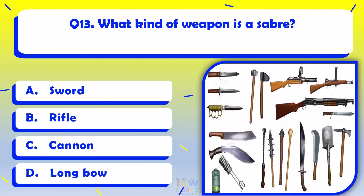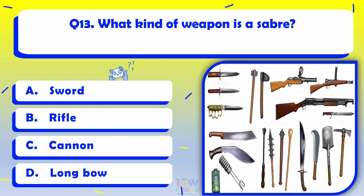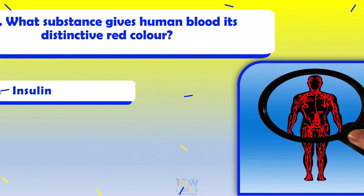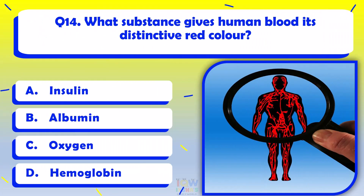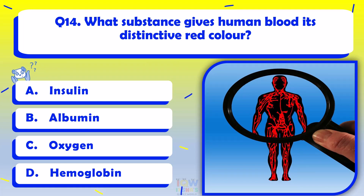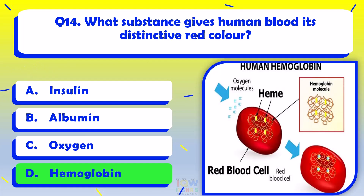What kind of weapon is a saber? Sword. What substance gives human blood its distinctive red color? Hemoglobin.